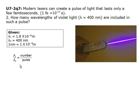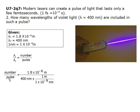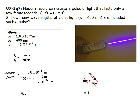Lambda 1 over lambda 2 equals the number of wavelengths per pulse. Number per pulse equals 1.8 times 10 to the negative 6 m over 400 nm, times 1 m over 1 times 10 to the negative 9 nm, which equals 4.5. Unit check: m over nm times m over nm — all the units cancel out, so the answer should have no units.